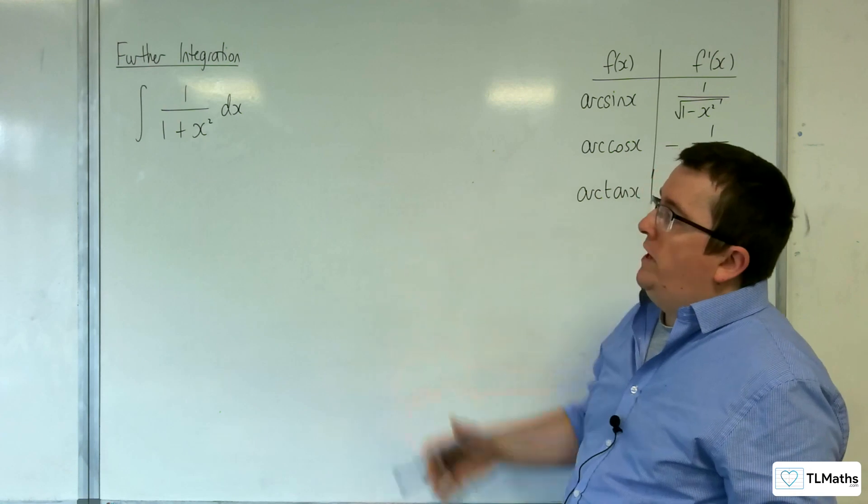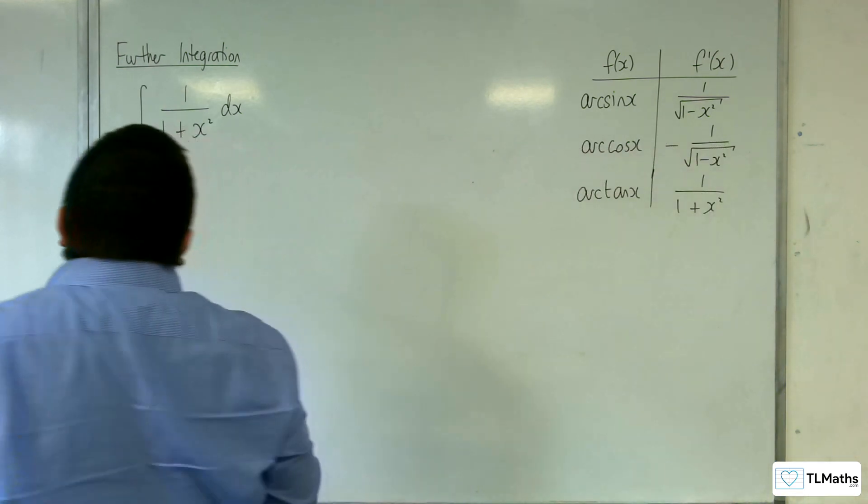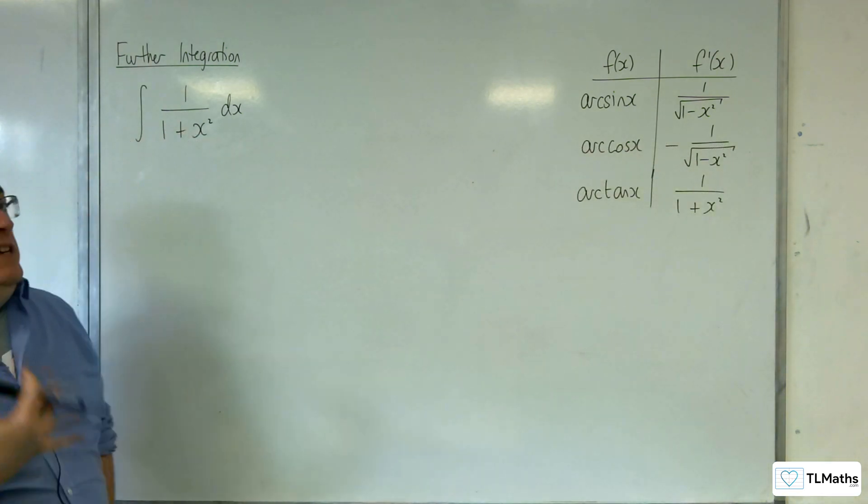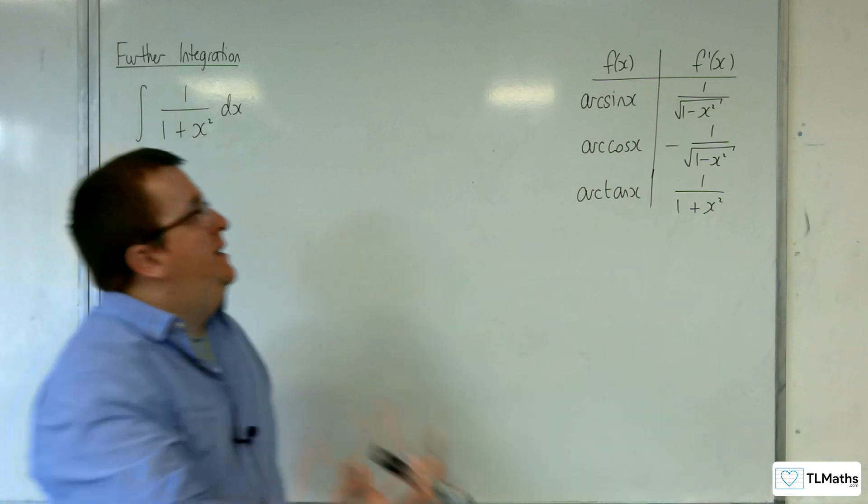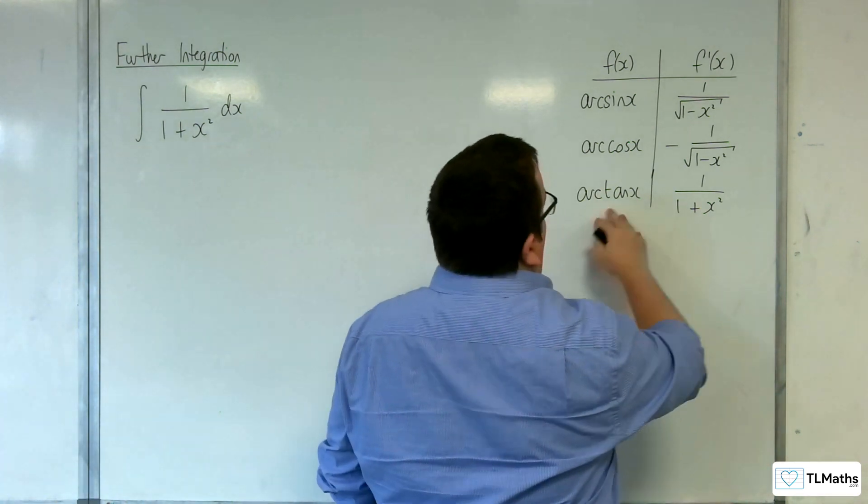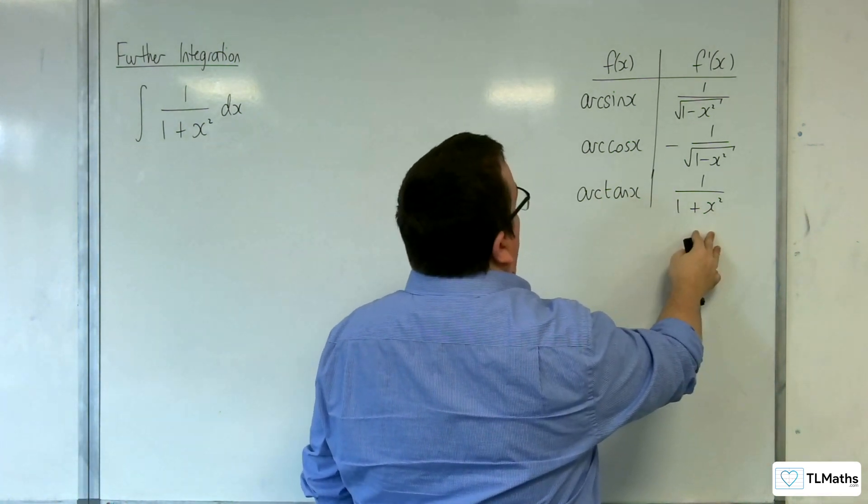So, in this video, we're going to be integrating 1 over 1 plus x squared with respect to x. Now, we know what the answer is going to be. We know that arc tan x differentiates to 1 over 1 plus x squared.